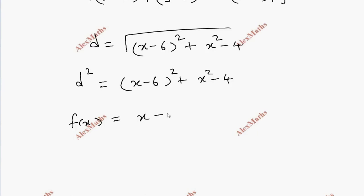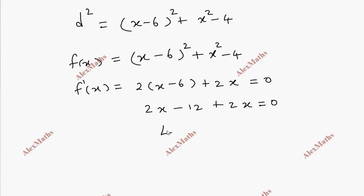So f(x) equals (x minus 6) whole square plus x square minus 4. f'(x) equals 2(x minus 6) plus 2x equals 0. So 2x minus 12 plus 2x equals 0. If we simplify, 4x minus 12 equals 0, so x equals 3.